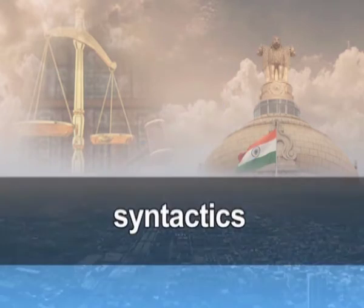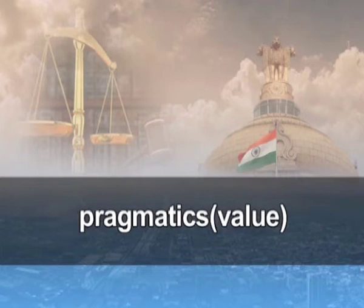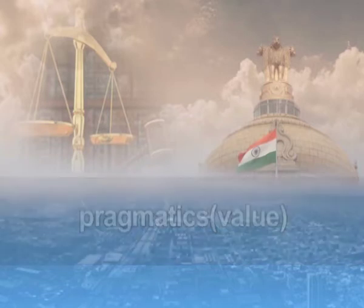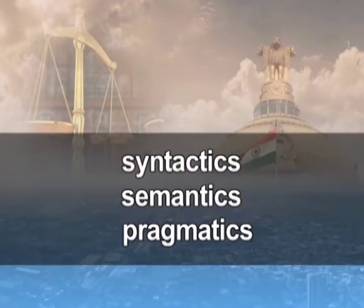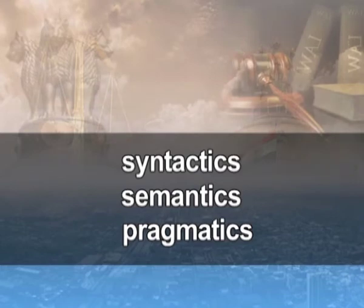Semiotics is generally talked about in terms of three aspects or three branches. One is syntactics, which refers to the organization of the entities or signs. Semantics refers to what they mean — the significance of the signs. Pragmatics refers to the value of these signs with reference to the user and to other systems — we locate a given system into a general pattern of systems and show the relationship. So syntactics, semantics, and pragmatics constitute what is called semiotics.